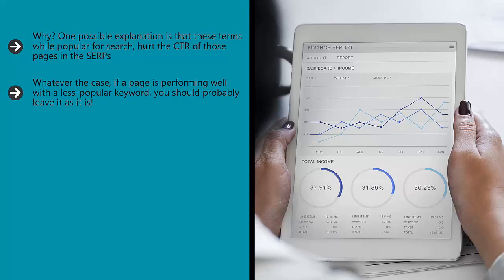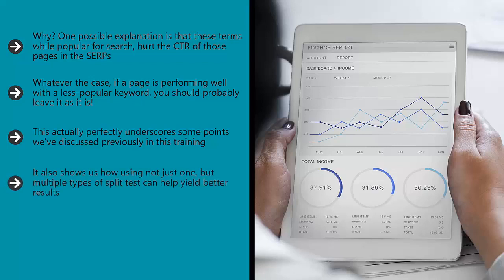Why? One possible explanation is that these terms, while popular for search, hurt the CTR of those pages in the SERPs. Another possibility is that this had to do with Google's RankBrain algorithm — its attempt to understand meaning more than explicit keywords. Whatever the case, if a page is performing well with a less popular keyword, you should probably leave it as it is. This actually perfectly underscores the multivariable nature of SEO and Google's algorithms — a recommendation might sound good on paper but doesn't always translate in the real world, especially now that Google pays close attention to signals from users such as bounce rate and CTR.